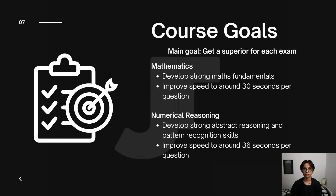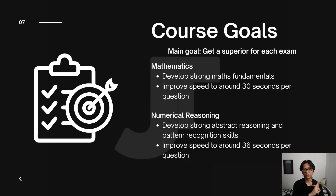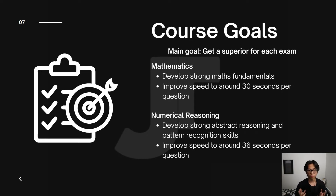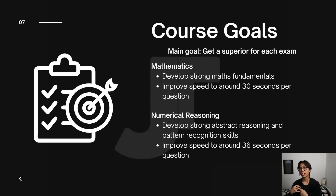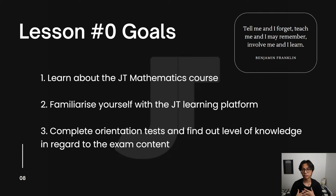So course goals. The main goal is to get a superior for mathematics and numerical reasoning. The sub-goals within those exams are: first, to develop strong fundamentals in maths, and second, to improve the speed of questions to around 30 seconds. And for numerical reasoning, it's to develop strong abstract reasoning skills as well as pattern recognition skills, and to improve our speed of questions to around 36 seconds.